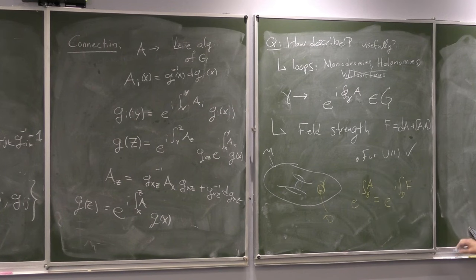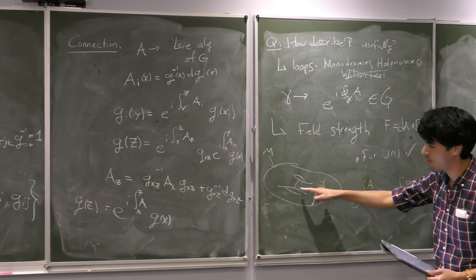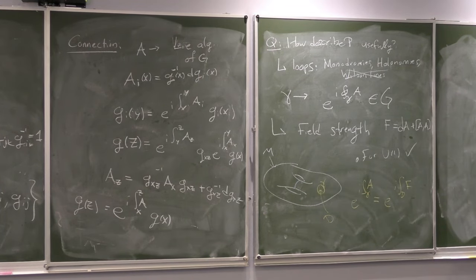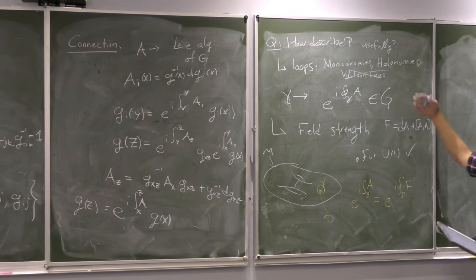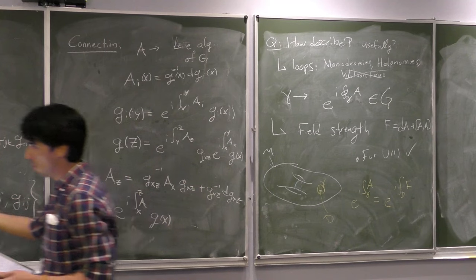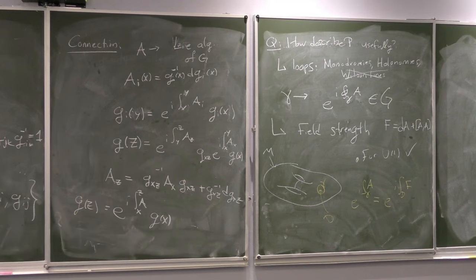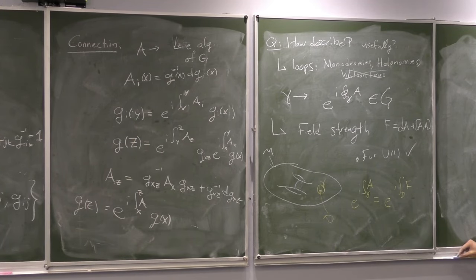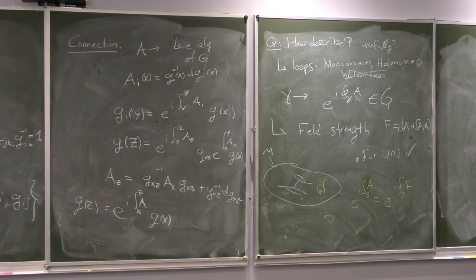The connection, measured for every loop, would let you reconstruct the geometry and topology of this space. But again, that's a lot of data. For U(1) this is nice, but for non-abelian gauge theories it's actually really complicated, because F is not actually gauge invariant.